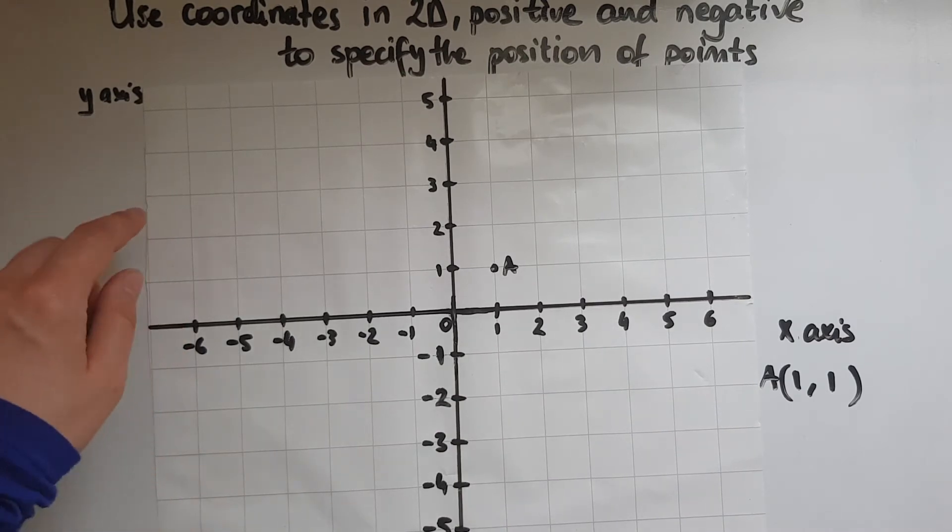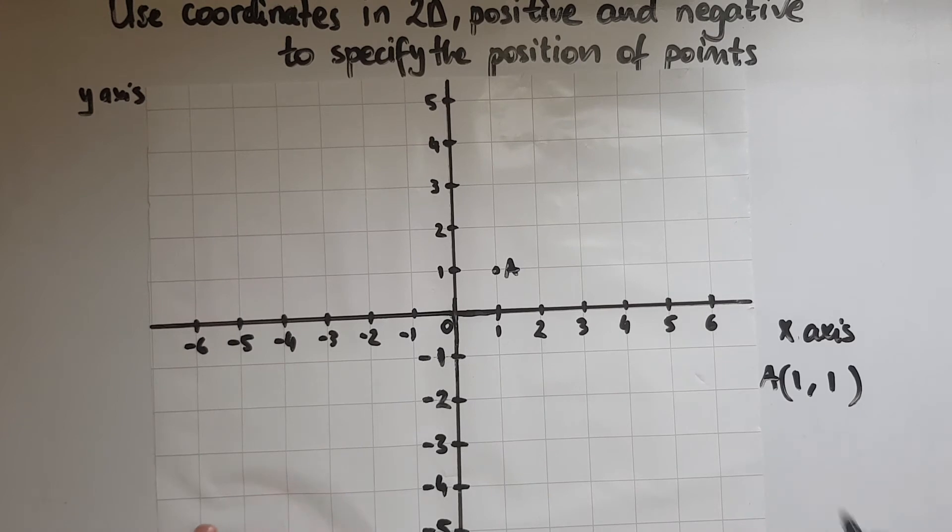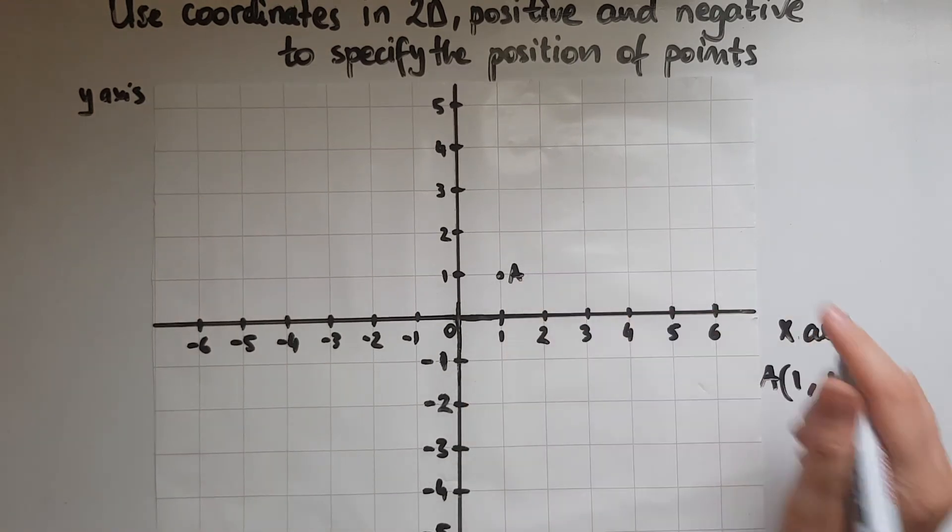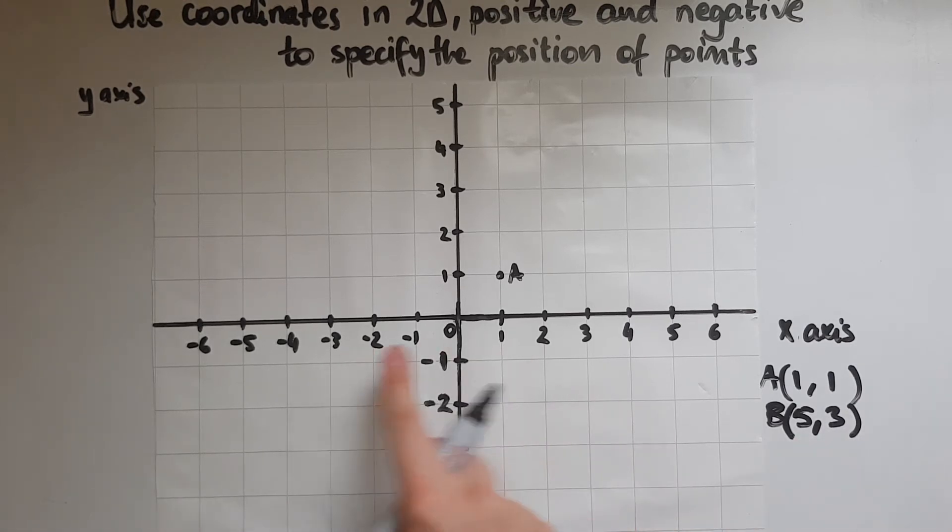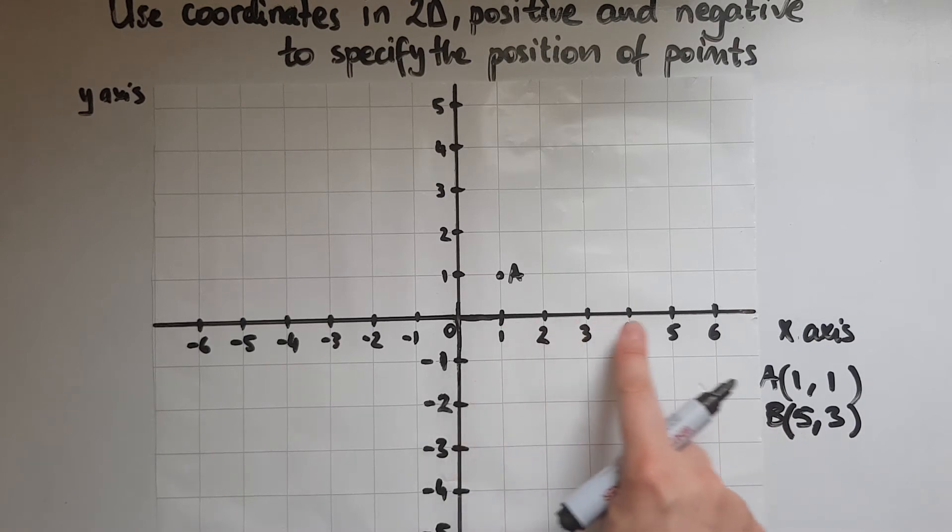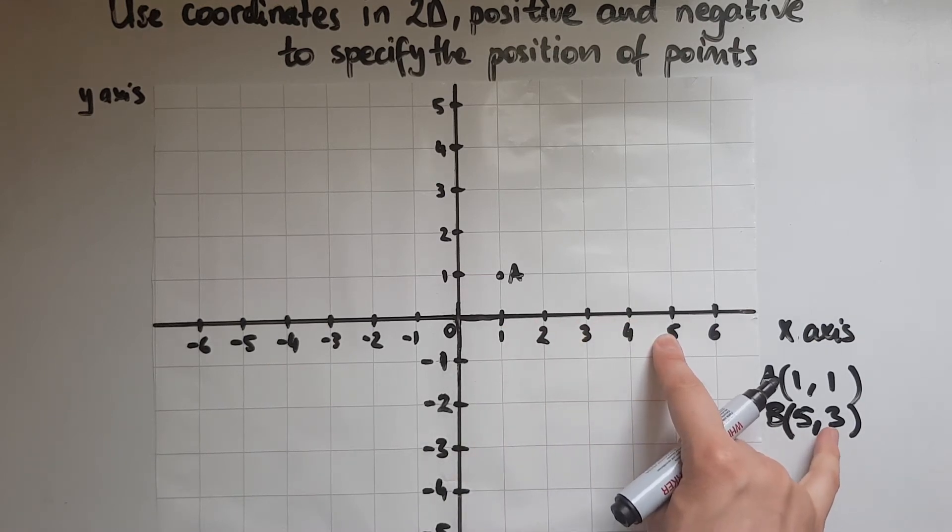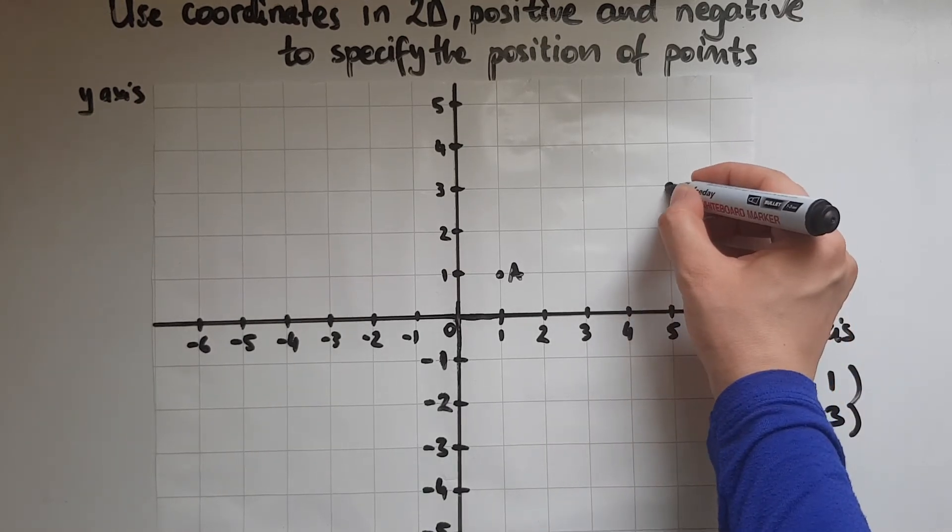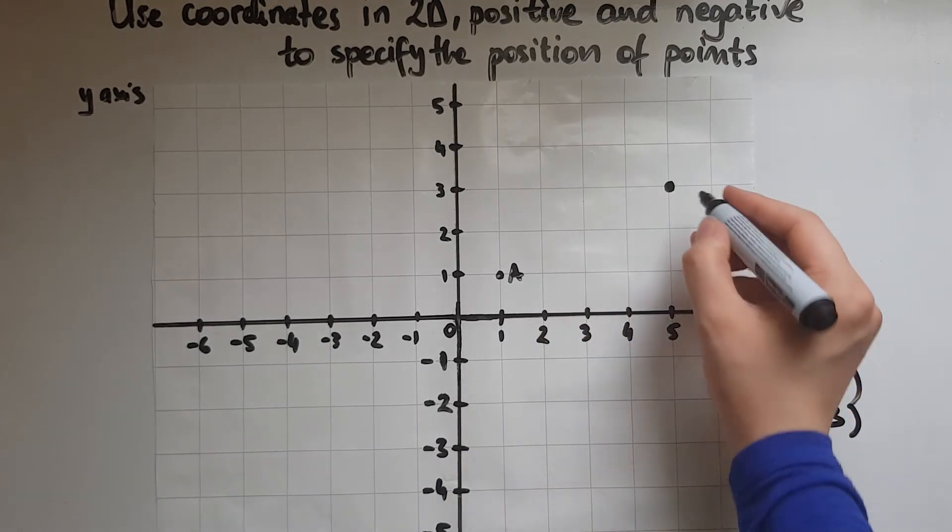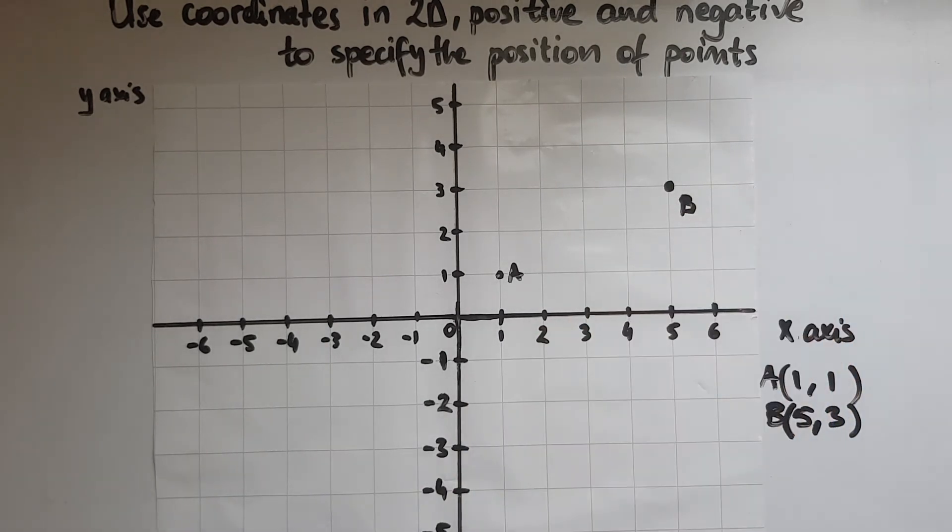Now, let's have a look at another point. Let's plot point B at (5, 3). Again, horizontally first, we start at 5 and then that means we're going up 3. We're going to this point, y being equal to 3. This is point B.